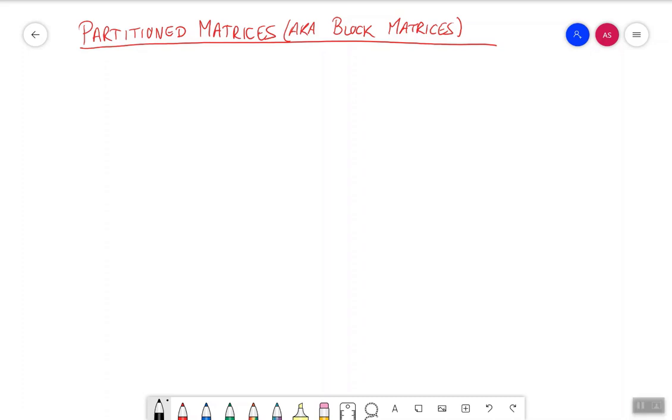Sometimes it can be very natural to view matrices as partitioned into blocks. For instance, we can look at this matrix A by partitioning it like this.